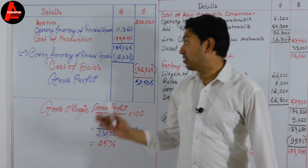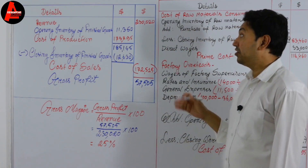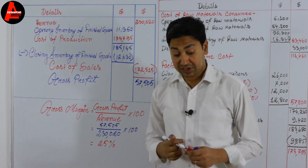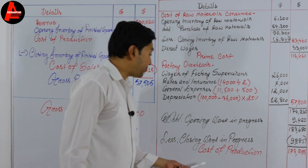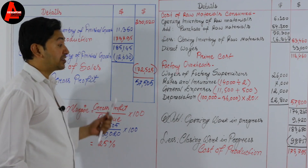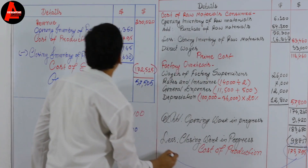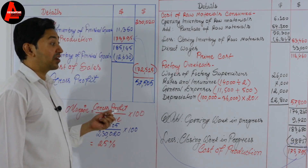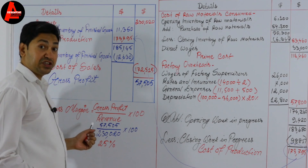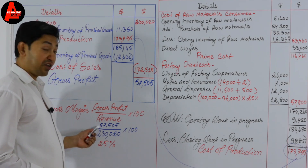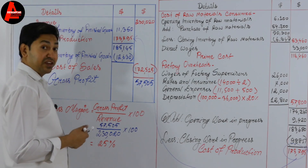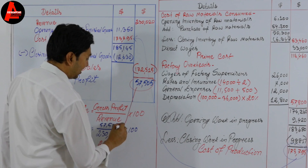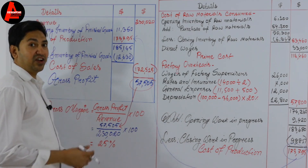This is a complete tutorial on the manufacturing account and the income statement. If you understand this question, you will be able to solve many more complicated questions. All parts are linked — if you don't know the manufacturing account, you cannot prepare the income statement, because the cost of production balance comes from there. And to calculate gross margin, you need gross profit from the income statement.